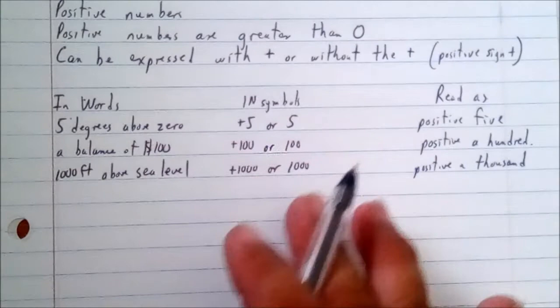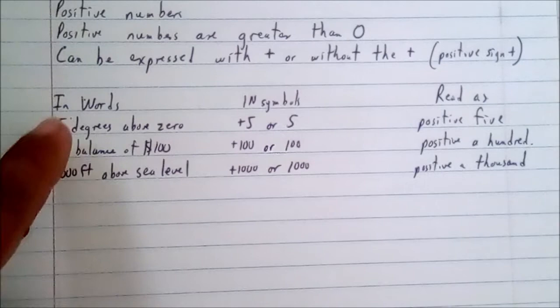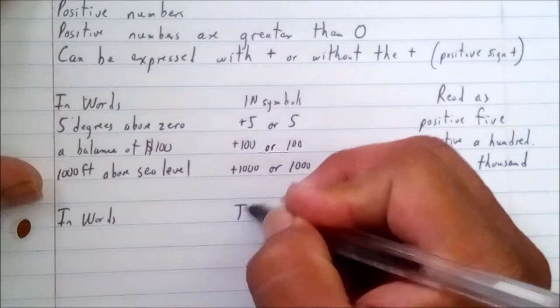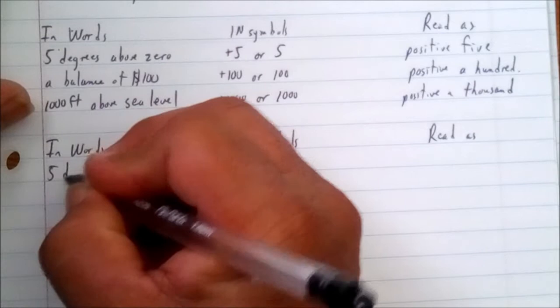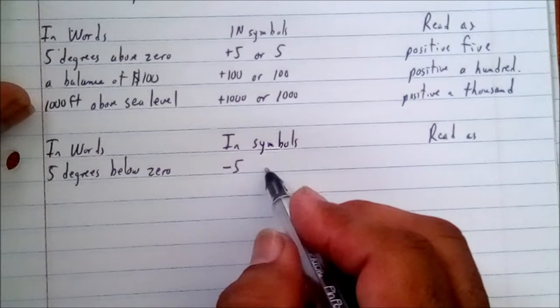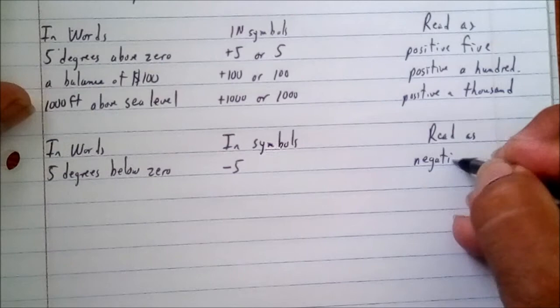Now what happens if we put negative values in front? How will they be read in words and how are they read in symbols? We'll use the same numbers so we can see the difference — in words, in symbols, and read as. Five degrees below zero can be written as negative five, and you cannot leave out the negative — it needs to be there. We simply read it as negative five.